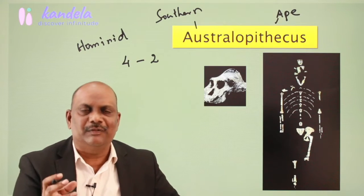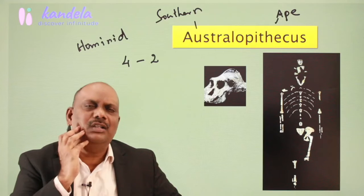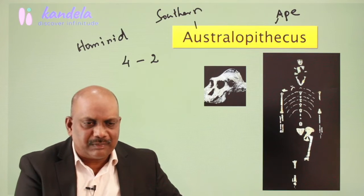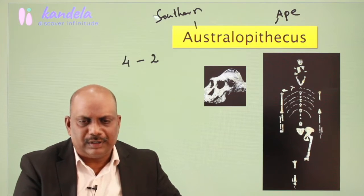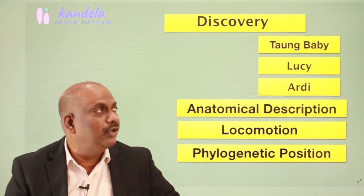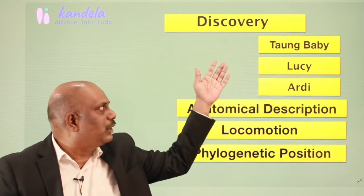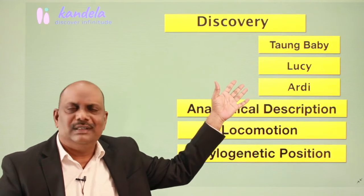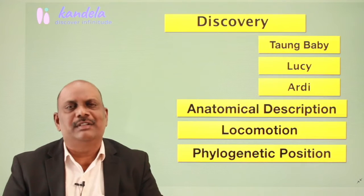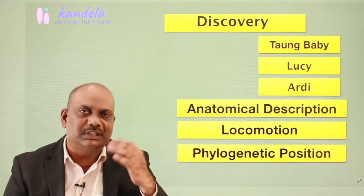Australopithecus were bipedal and terrestrial, and they had a large jaw meant for biting and chewing. In this lecture we will discuss: the discovery of Australopithecus, the famous Taung Baby, the discovery of Lucy, the discovery of Ardipithecus, and the anatomical features of Australopithecus including cephalic and post-cephalic features.